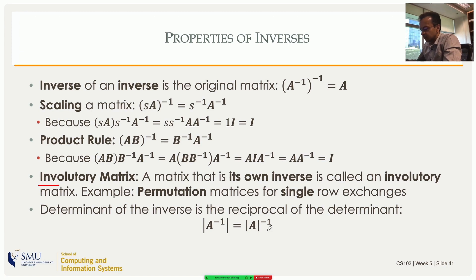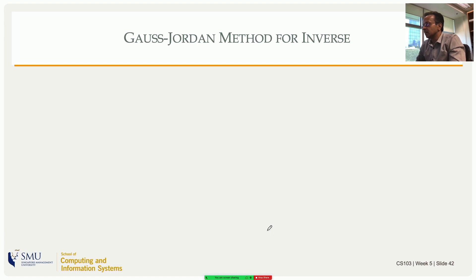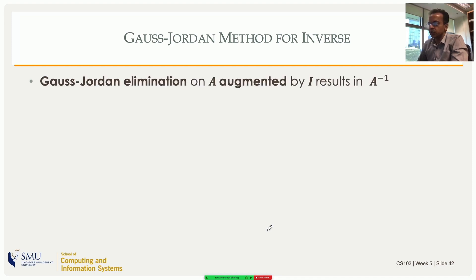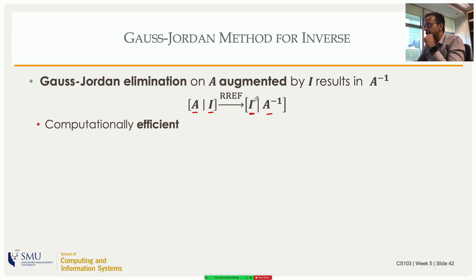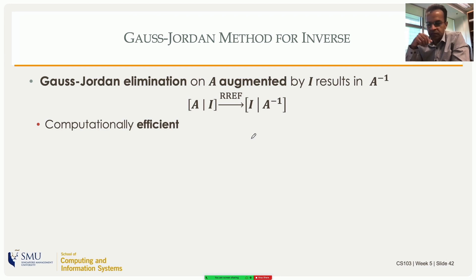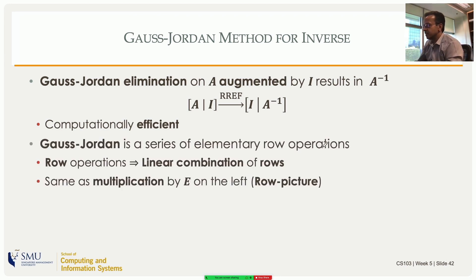The determinant of A inverse equals the determinant of A inverse. The coolest way to compute an inverse is the Gauss-Jordan method. You run Gauss-Jordan on the augmented matrix [A | I], where A and I are both n by n. After computing the reduced row echelon form, you get I on the left block and A inverse on the right block. This method is computationally efficient and guaranteed to converge.